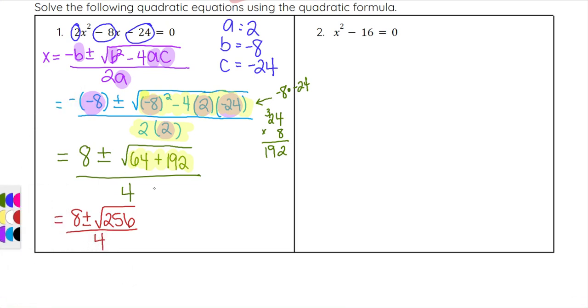Once you have the part under the square root simplified, we look at the square root as a whole. 256 is a perfect square. The square root of 256 is 16. So we rewrite this as 8 plus or minus 16 all over 4.